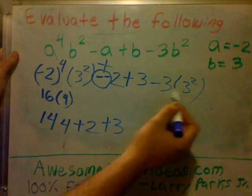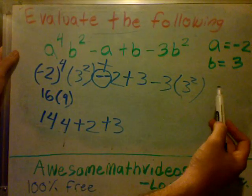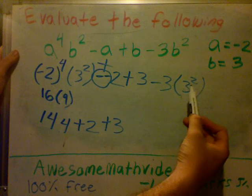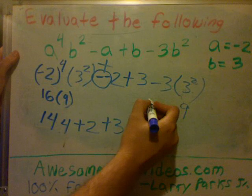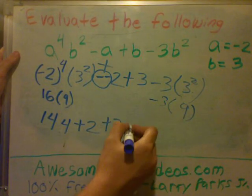Now over here we have minus 3 times 3 squared. A common mistake is to take 3 times 3, but remember you have to do order of operations. So you always do exponents before you multiply, so 3 squared is 9, and we have that times minus 3. Minus 3 times 9 is minus 27.